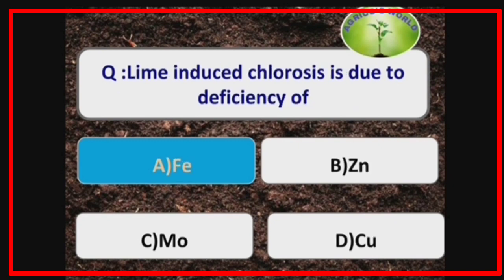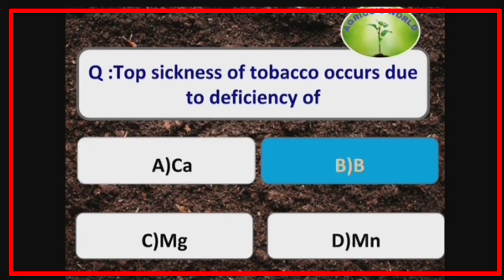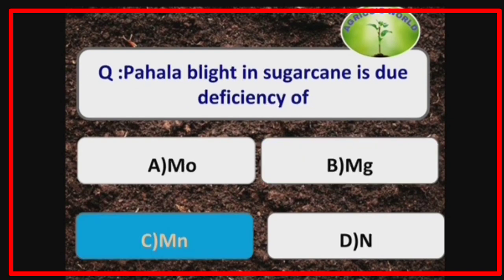Lime-induced chlorosis is due to the deficiency of iron. Top sickness in tobacco occurs due to the deficiency of boron. Pahala blight in sugarcane is due to the deficiency of manganese.